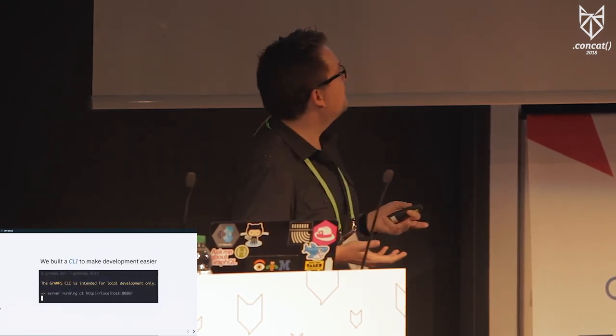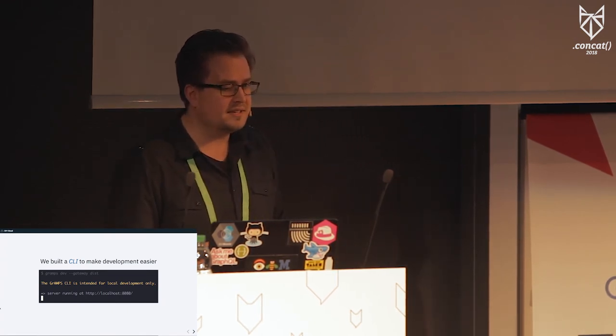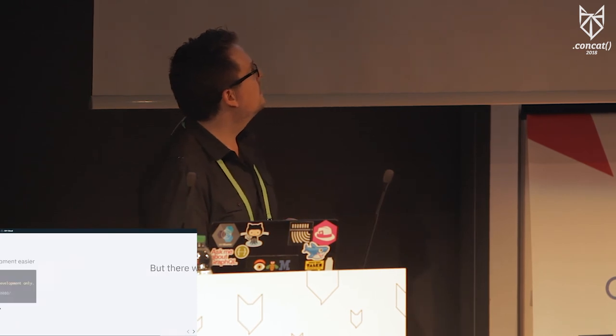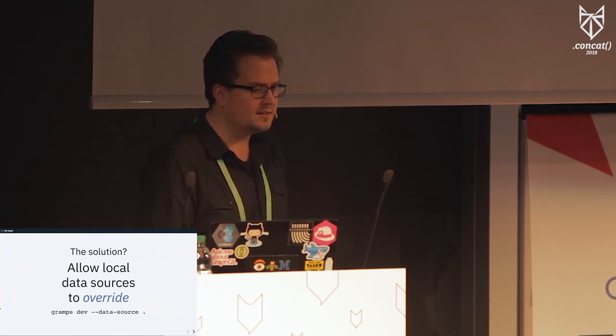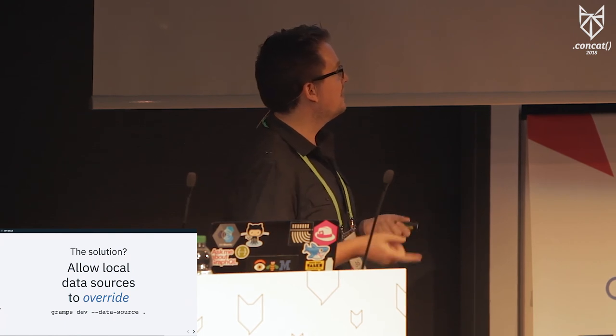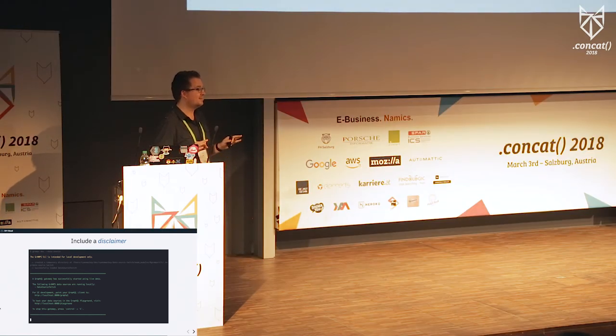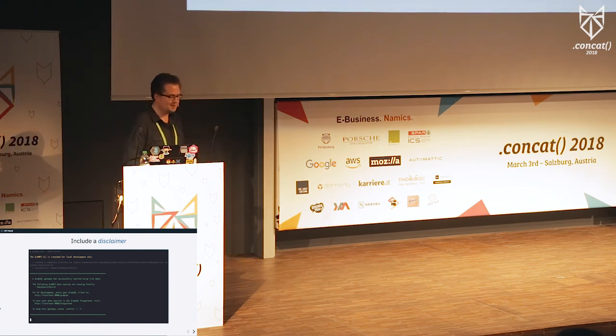For local development, we also developed a CLI to make things easier. With this, you could run your data sources locally, include a gateway to a GraphQL server, and even run it with mock data by just using a dash-dash-mock flag. There was a snag initially — if you have a gateway to a GraphQL microservice and that data source is already installed on it, all of the types would collide. So we added the ability to override those data sources by just specifying that. We also included a disclaimer so people know it's not production code and you're just running the data source locally, giving you a clean readout of exactly what's going on.